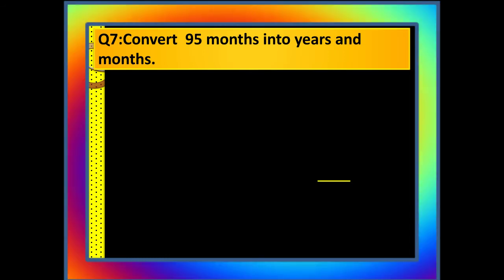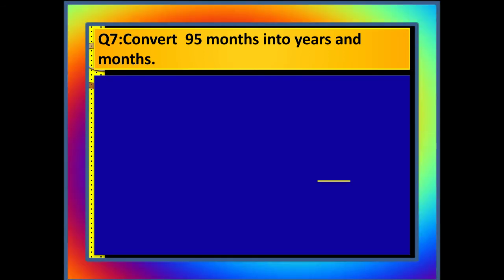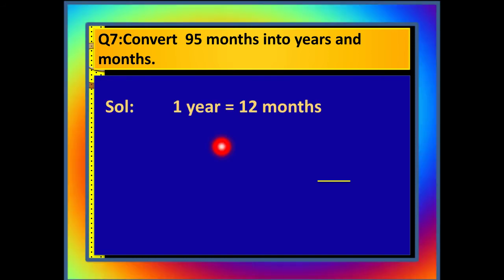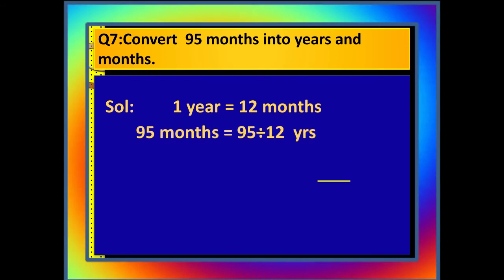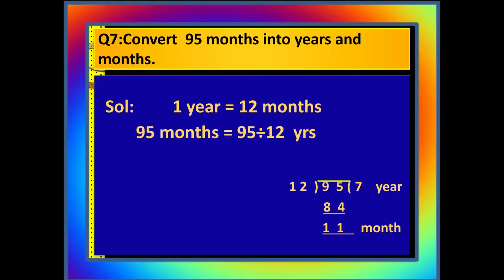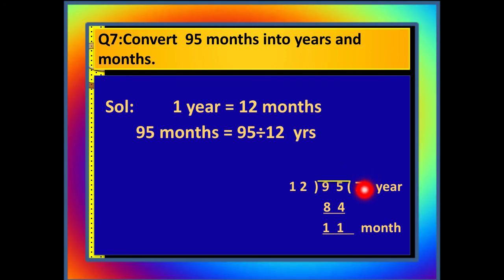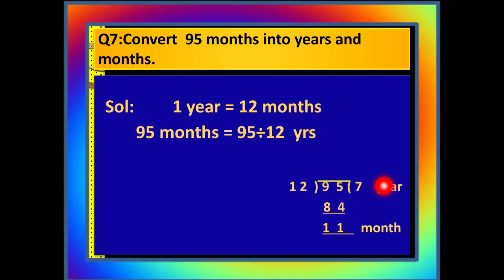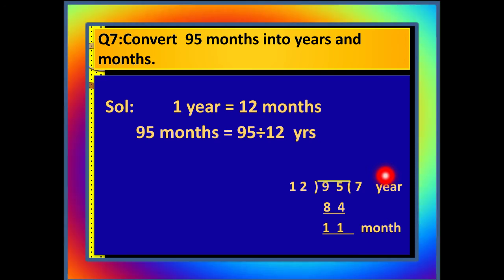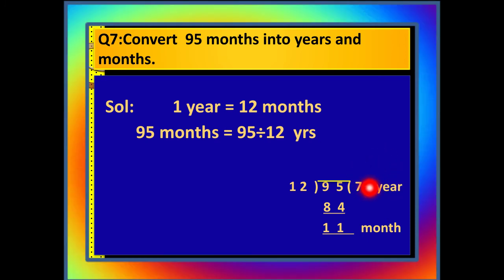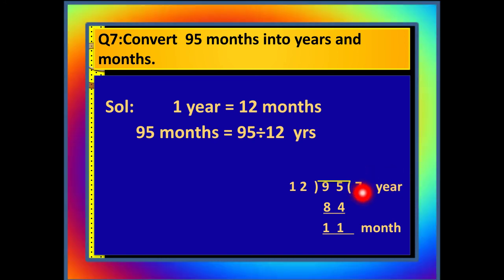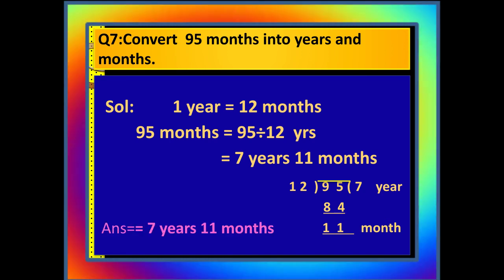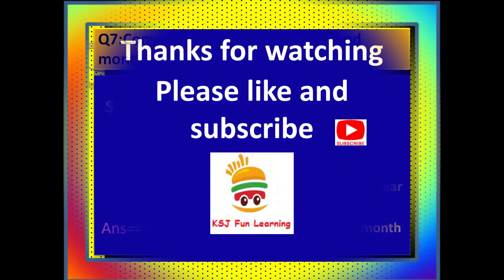Further, we will learn how to convert months into years and months. One year has 12 months in it. So 95 months divided by 12 gives us 7 as the quotient and 11 as the remainder. The bigger unit is represented by the quotient and the smaller unit by the remainder. So our answer is 7 years and 11 months.